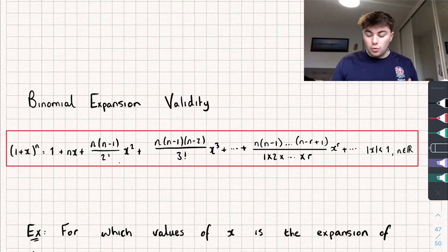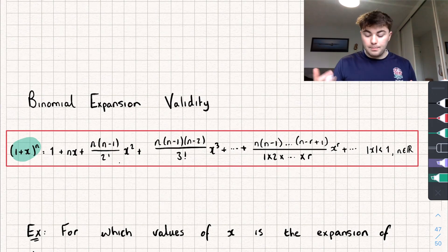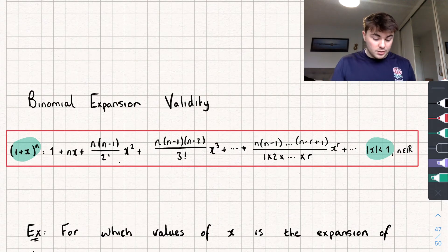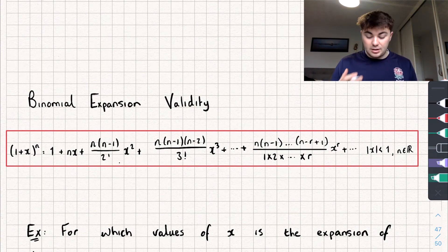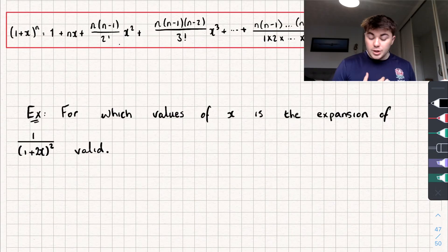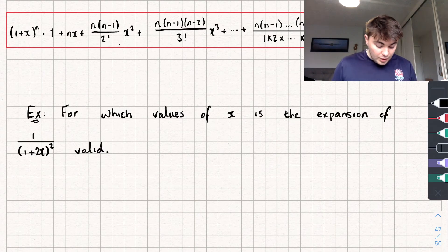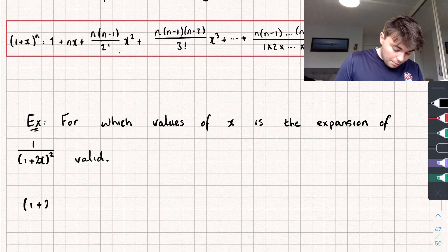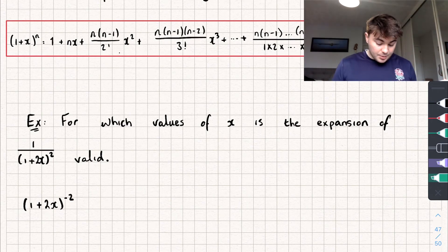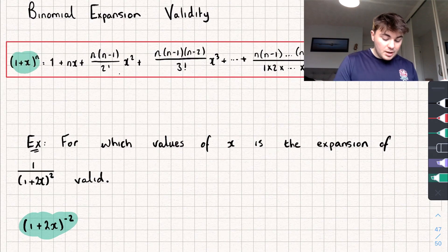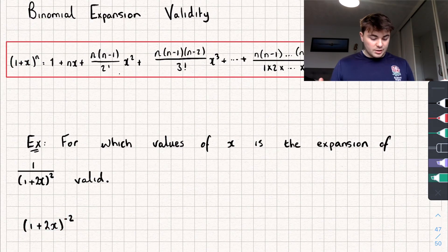Sometimes your question won't be in such a nice form — it might not be of the form (1 + x) to the power of n. So we're going to have to change the range of values of x that it's valid for in order for the formula to work. I'm going to work through some different exam questions so you'll get a feel for how this works.